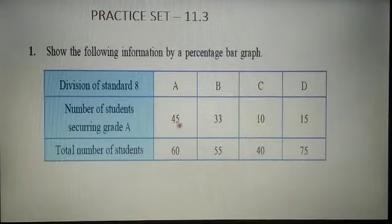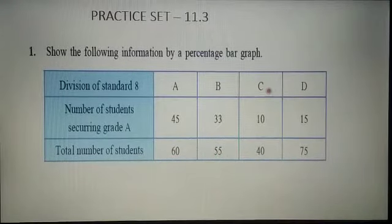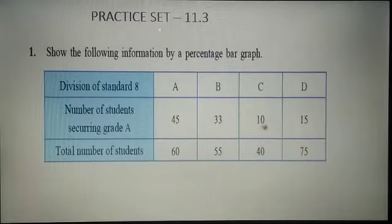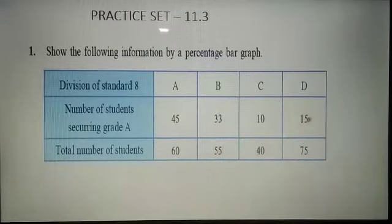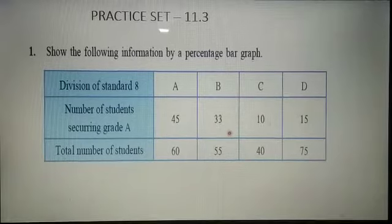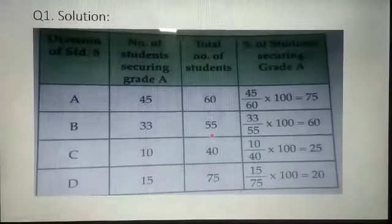In Section C, total students are 40 and 10 students secured Grade A. In Section D, total students are 75 and 15 students secured Grade A. Now we will write down the solution table — with columns for division, number of students securing Grade A, total number of students, and percentage of students securing Grade A.